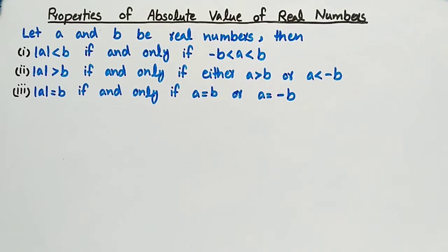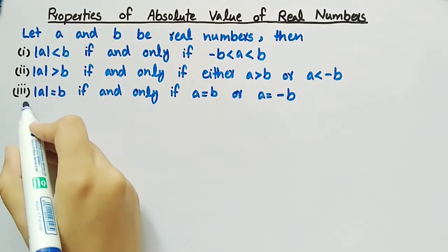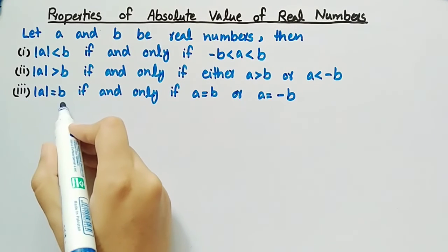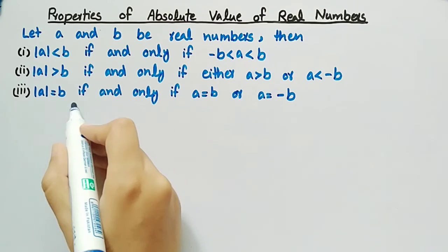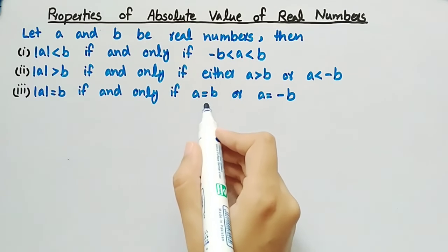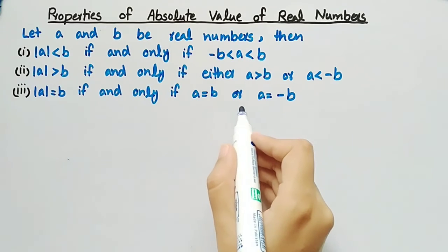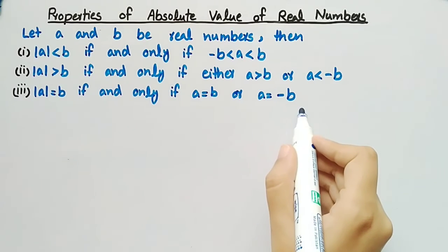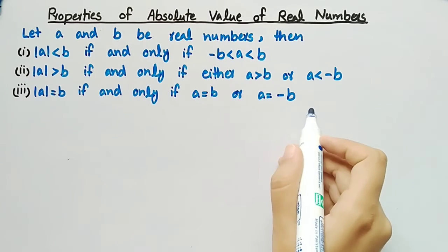The third property is: the absolute value of A is equal to B if and only if A is equal to B or A is equal to minus B.